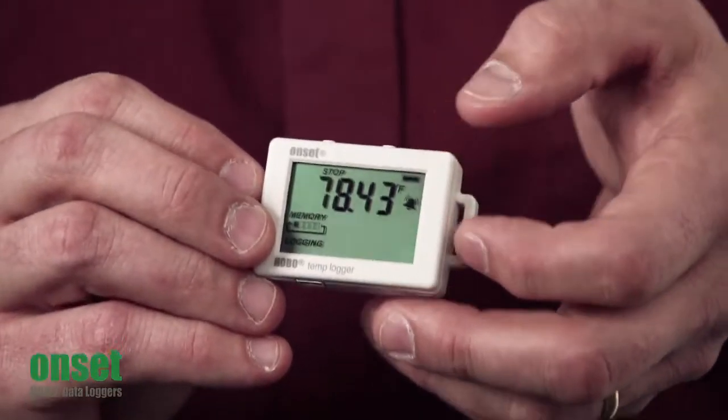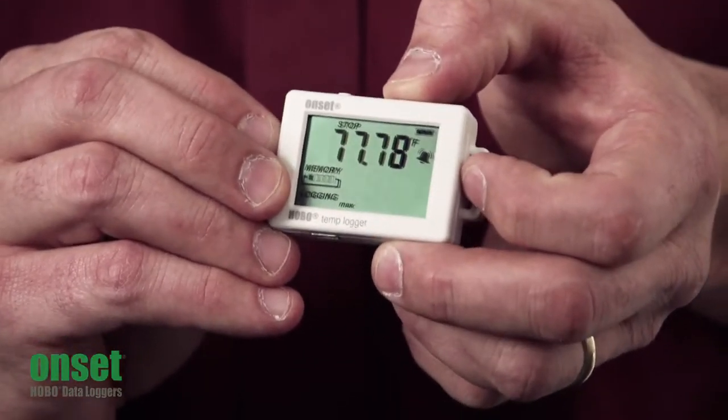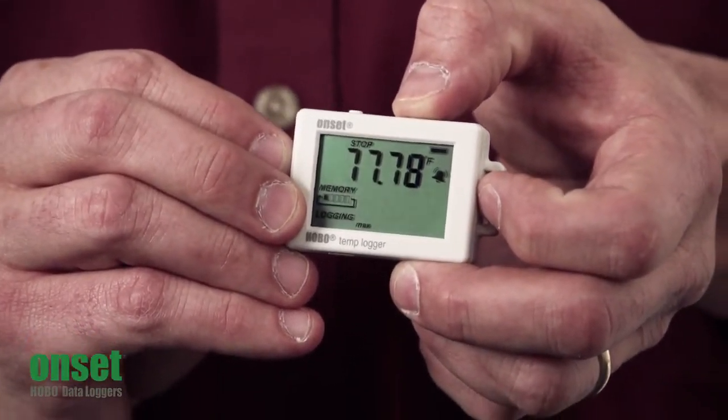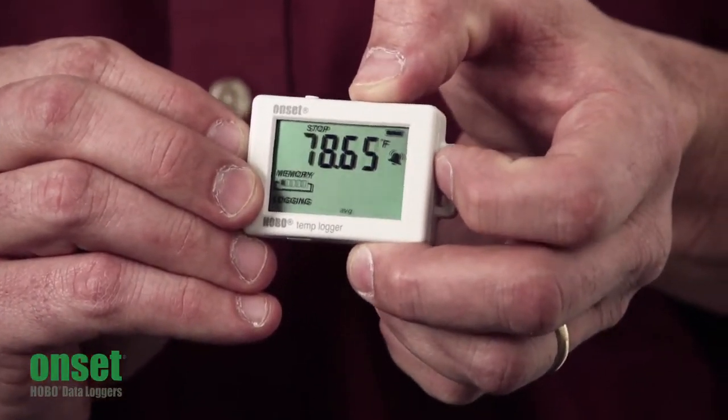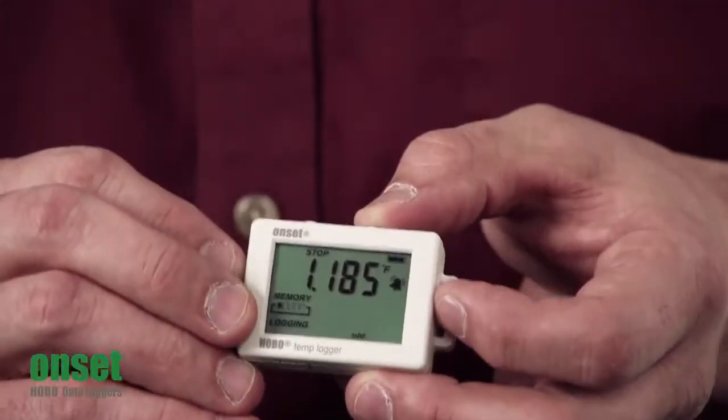Using the right push button here, you can scroll through your different readings. As you push the button, you can see the min, max, standard deviation, and average readings, as well as your alarm measurement, and come back to the normal readings.